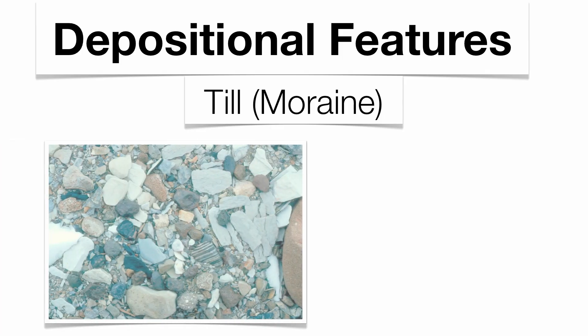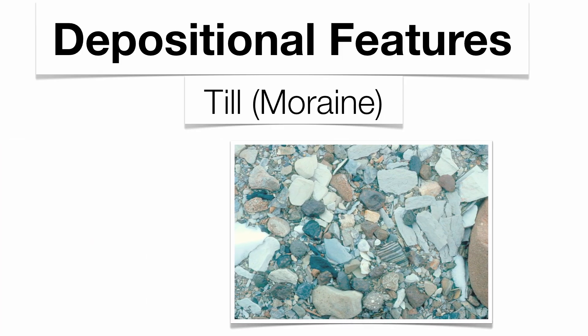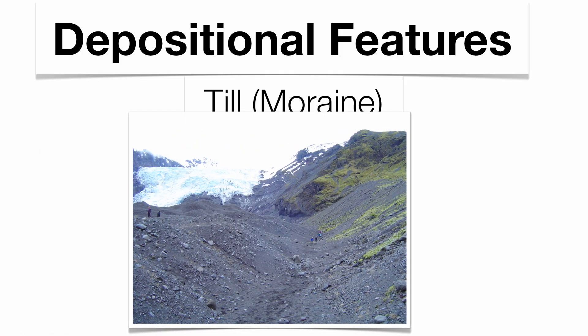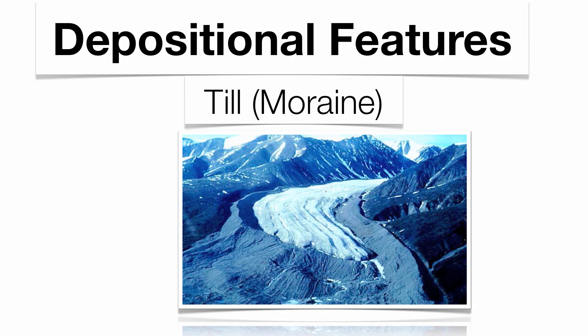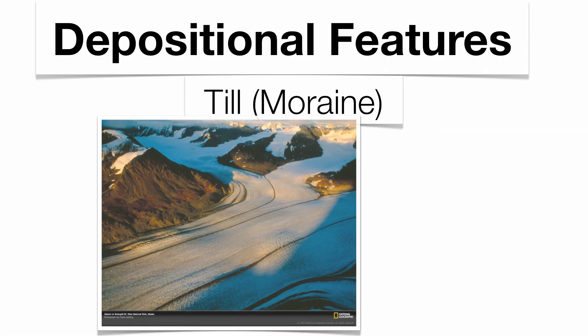We can also get depositional features as well. Some of the depositional features include till, which are also called moraines. This is the large collections of unsorted material — no organization to the sediment at all. Sometimes those moraines are at the end, called terminal moraines. Sometimes they're on the side, called lateral moraines. And sometimes they're in the middle, called medial moraines.